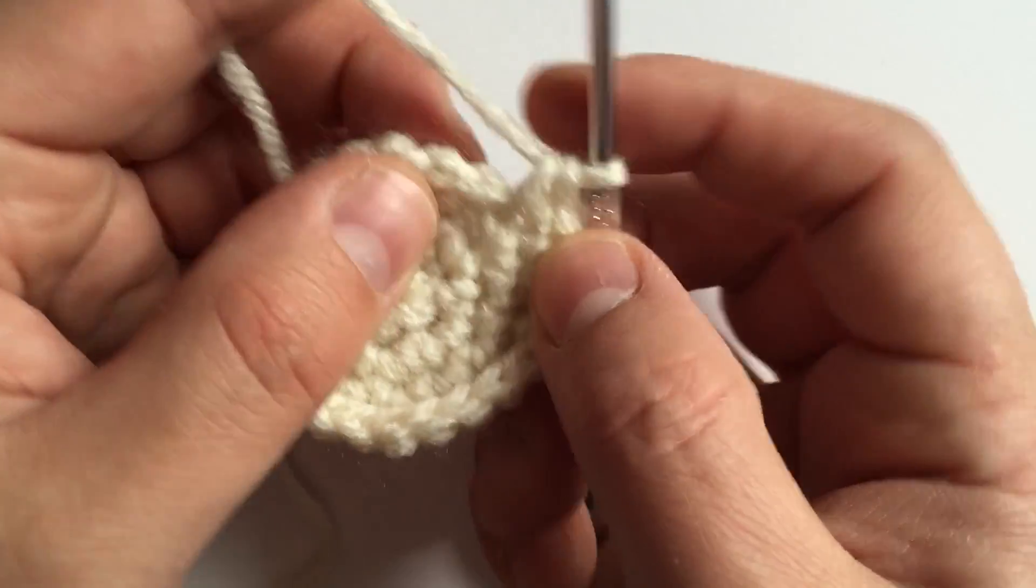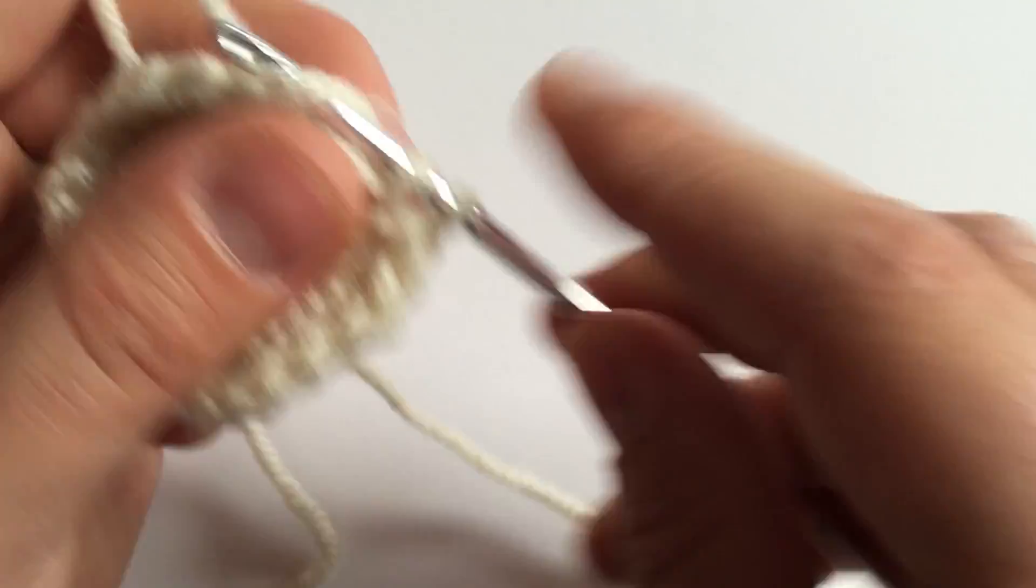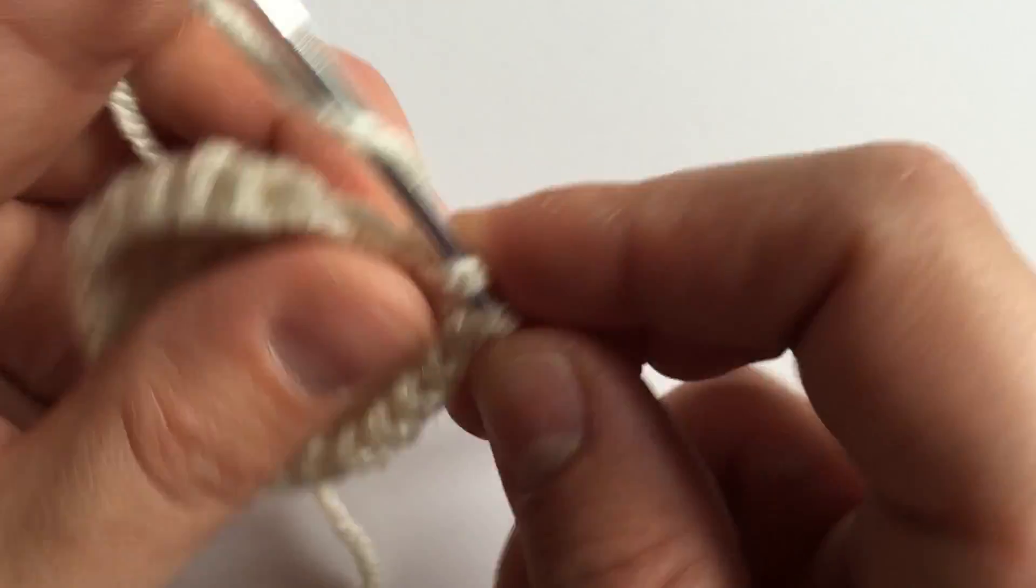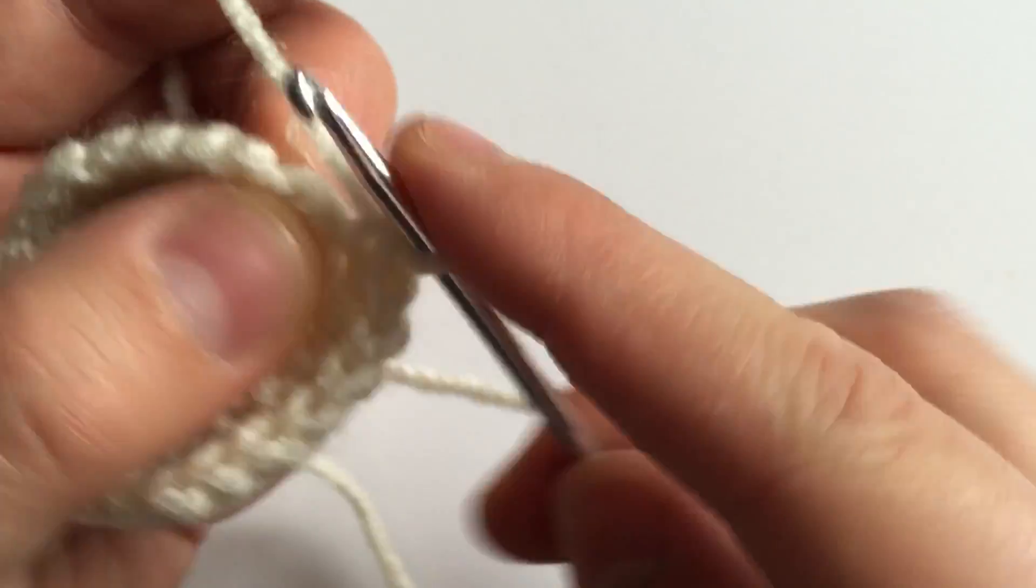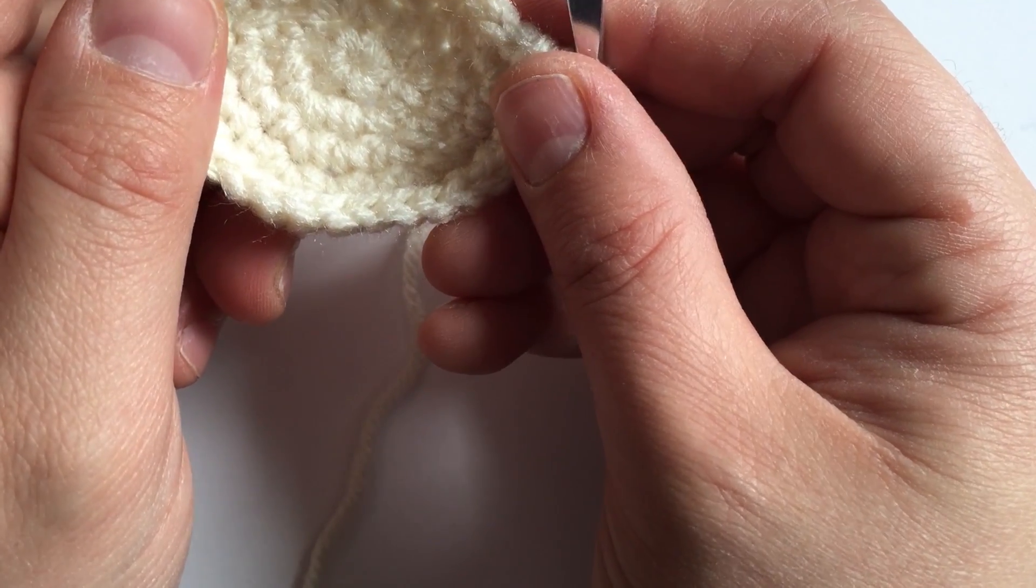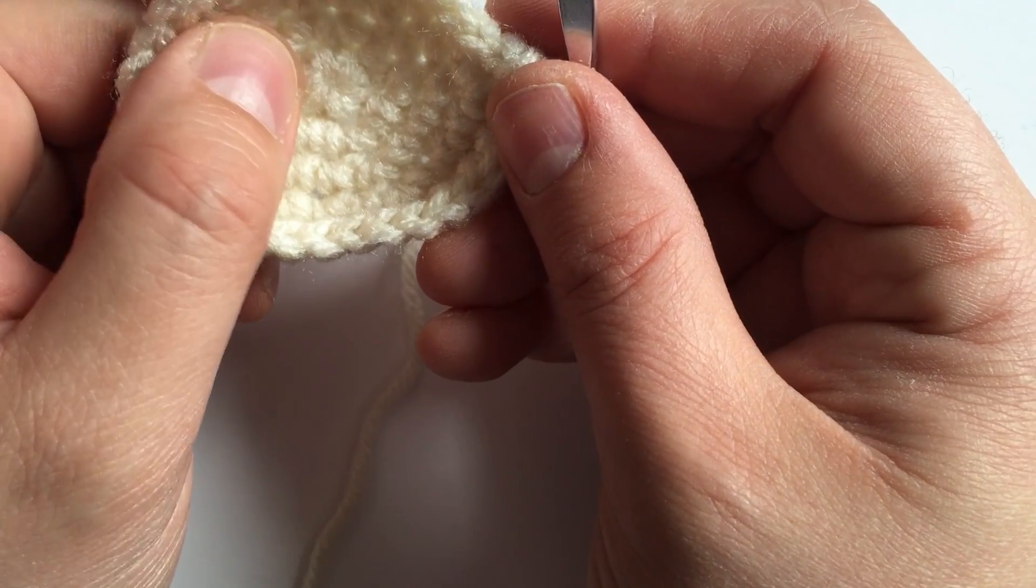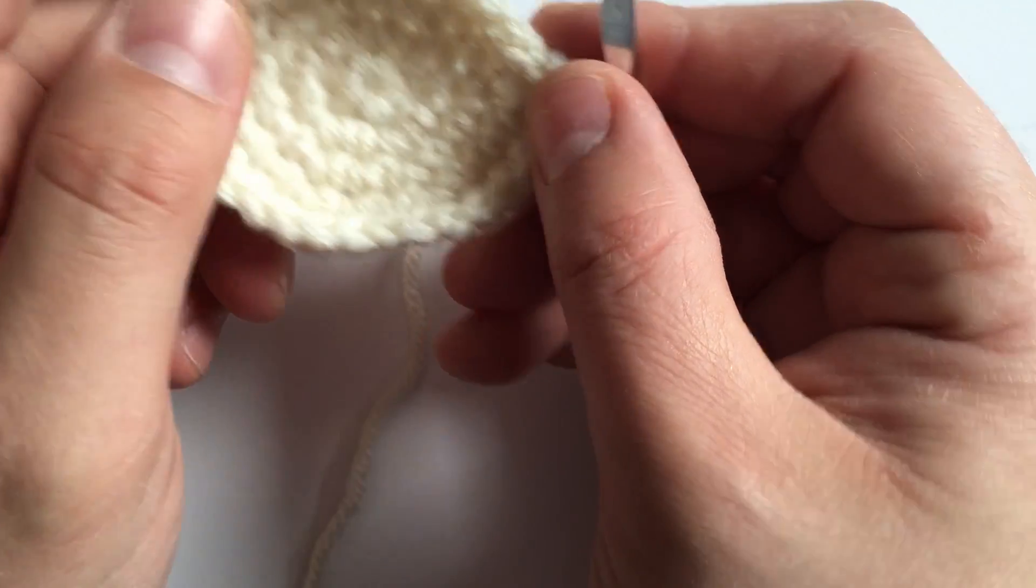Continue following this pattern for the next two rounds: four single crochets and an increase for a total of 36, then five single crochets and an increase for a total of 42. Then do five rounds at 42 single crochets each.